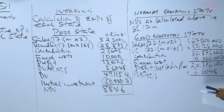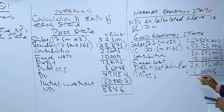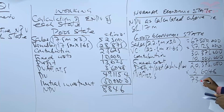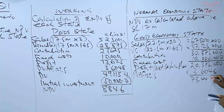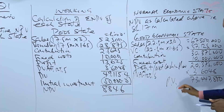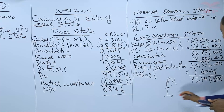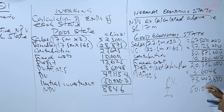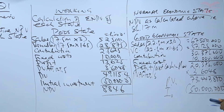Multiplying 20,375,000 by 3.6048 gives a present value of 73,447,800. We then deduct the initial investment of 50 million.